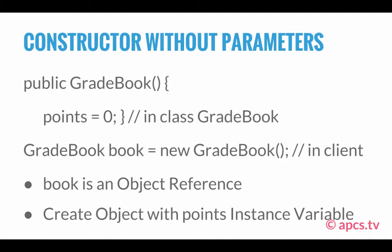In a client program or any other program, we could declare a variable known as book: GradeBook book = new GradeBook(); What this is doing is creating a variable book that is of type GradeBook, referring to a GradeBook object. This GradeBook object is created from the GradeBook class. As you can see, new GradeBook() is referring to the constructor method we've defined in the GradeBook class. This constructor method enables us to create a book variable of GradeBook type, and its values include points being equal to zero.